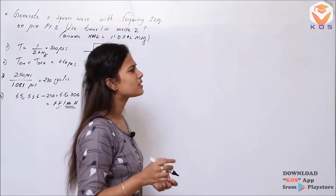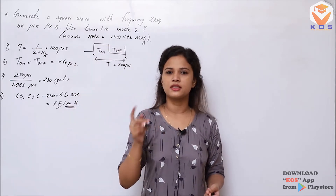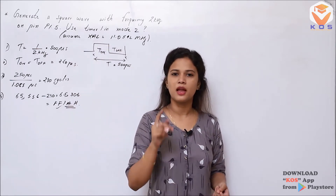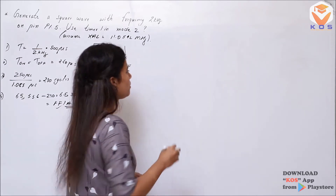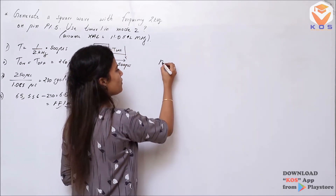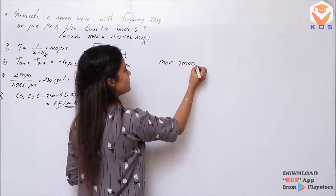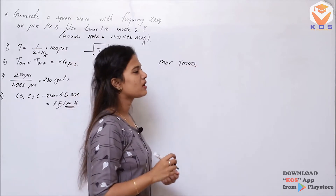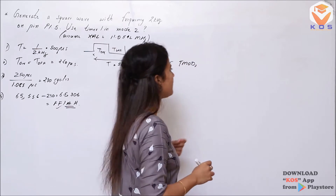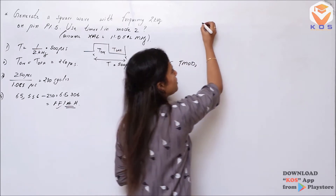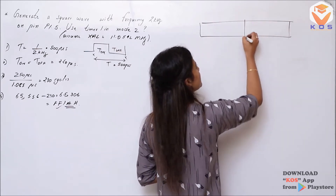In the timers and counters section, we configure the TMOD register. We move a value into TMOD. The TMOD register controls Timer 0 and Timer 1.